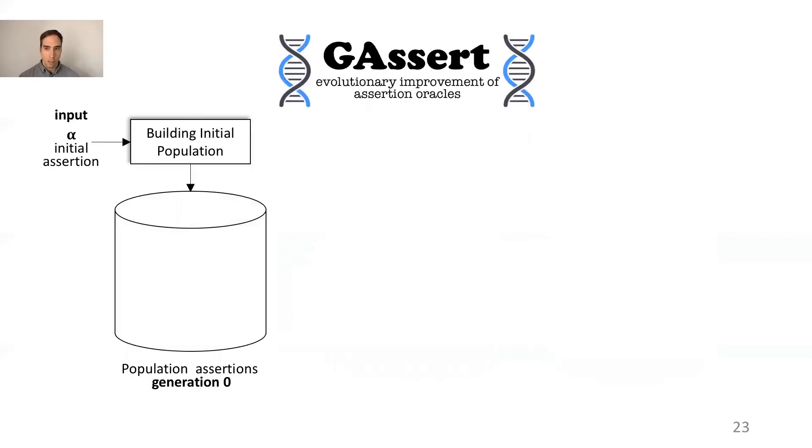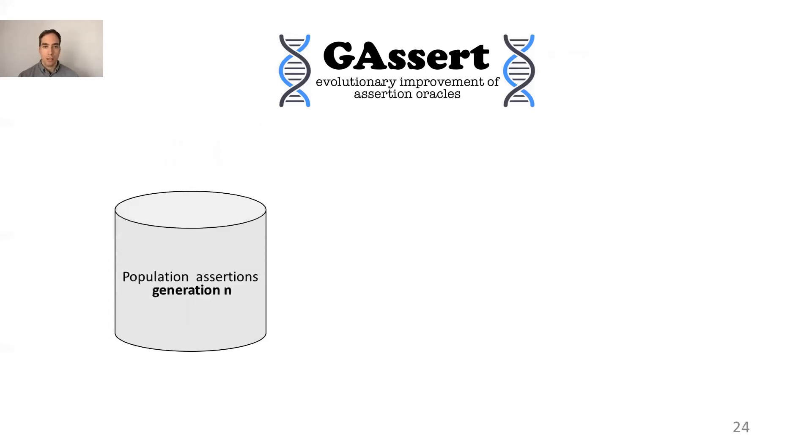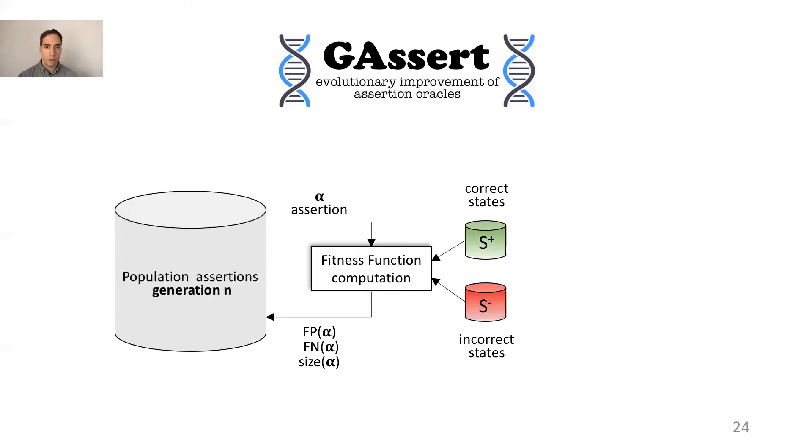Let's see how J-Assert works internally. Given the initial assertion alpha, it generates an initial population with half the population with mutations of alpha to have good genetic material for evolution, and the other half with random assertions to introduce diversity. Let's see how J-Assert evolves the population at generation N. J-Assert first recomputes, for each assertion in the population, the number of false positives, false negatives, and the size. It needs this information to compute the fitness function.